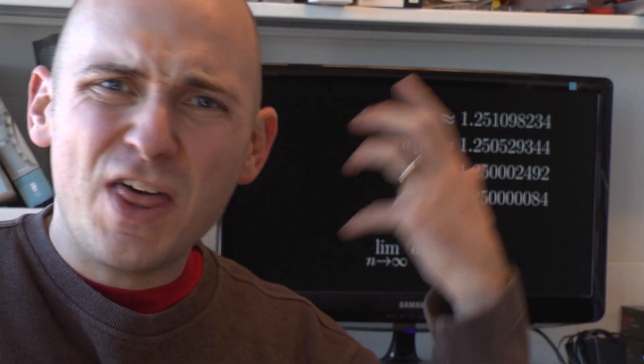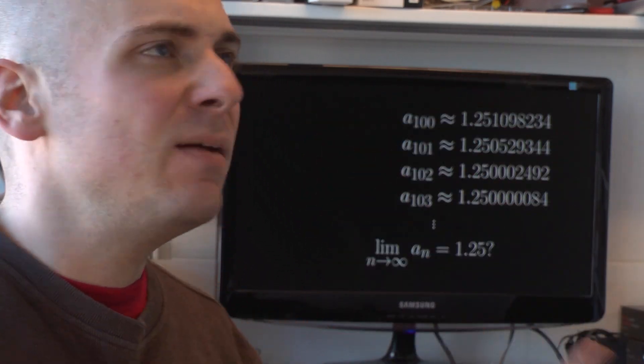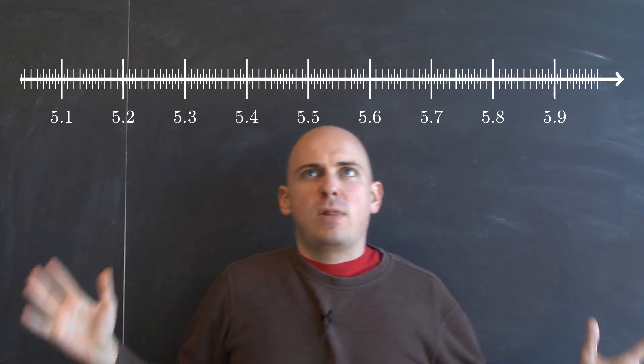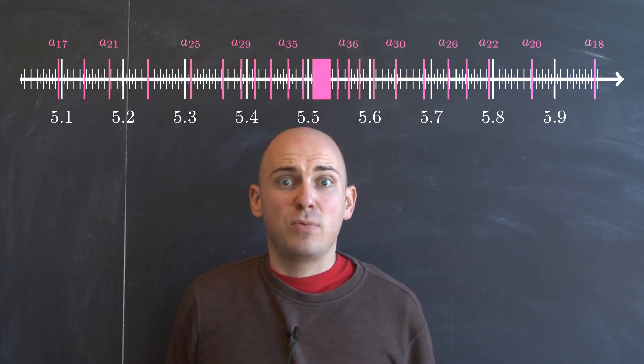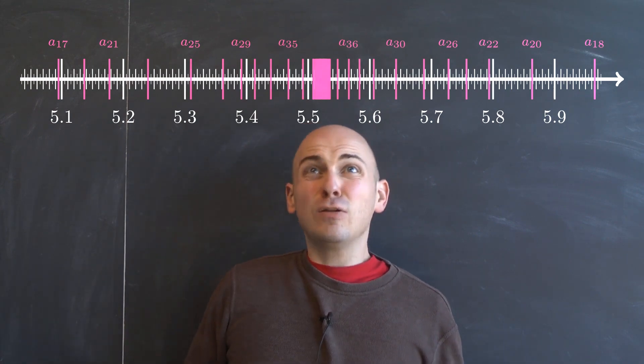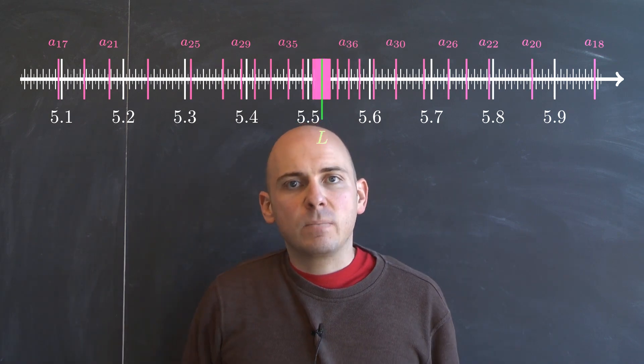But we can also think about limits in a more geometric way. So here I've got a number line, and I've plotted the terms in my sequence on that number line. And it looks like the limit is L. But what does that mean?